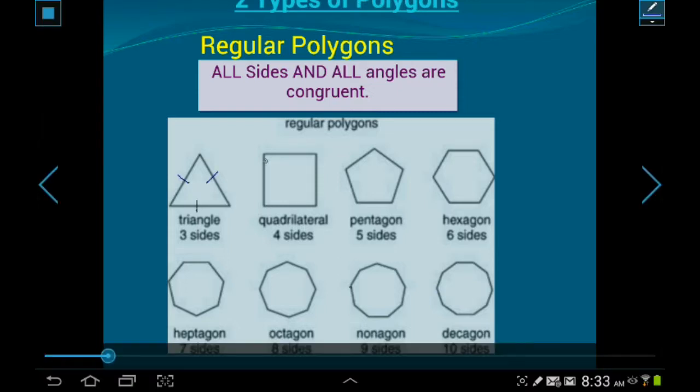All those sides are equal. This is a regular quadrilateral would be, of course, a square. All the sides are equal. This is a regular pentagon. All these sides are equal. And there's a lot of things you can take away from knowing that it's a regular shape.